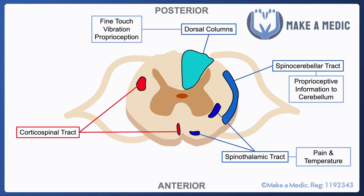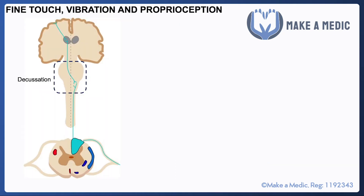When it comes to motor pathways, we have the corticospinal tracts: the anterior corticospinal tract at the front and the lateral corticospinal tract on the left-hand side. These are responsible for voluntary motor control and are descending pathways, transmitting motor commands from the primary motor cortex down towards the muscles that actually produce the required actions.